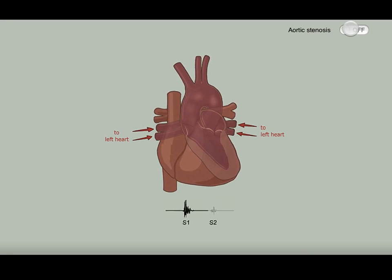But if we turn on aortic stenosis by flipping this switch, we introduce the murmur of aortic stenosis associated with the narrowing of the aortic valve. Listen closely as we play the animation.